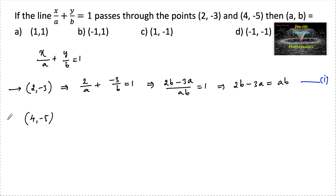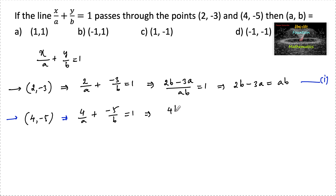If the line is passing through the point (4, -5), substituting x = 4 and y = -5 gives: 4 upon a plus (-5) upon b is equal to 1, which implies 4b minus 5a upon ab is equal to 1, so 4b minus 5a is equal to ab. Let us consider this as equation 2.